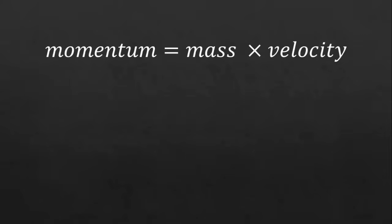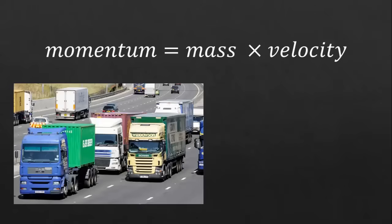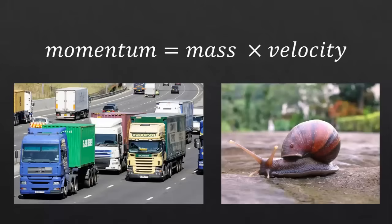Momentum is the quantity you get when you multiply mass and velocity. A heavy, fast-moving object like a lorry on a motorway will have a lot of momentum, whereas a small, slow-moving object like a snail has much less momentum.